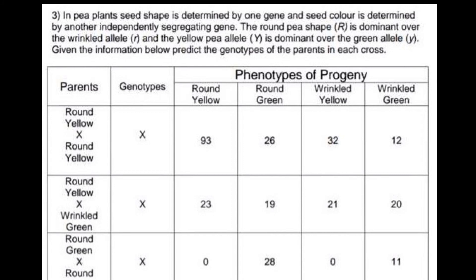Hello and welcome to Nikolai's genetics lessons. Today's problem was sent to me by one of my subscribers. The problem involves pea plants where seed shape is determined by one gene and seed color by another independently segregating gene. Round shape (R) is dominant over wrinkled (r), and yellow (Y) is dominant over green (y). Given the information below, predict the genotypes of the parents in each cross.